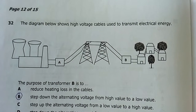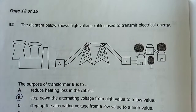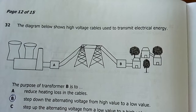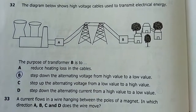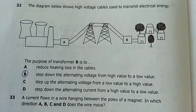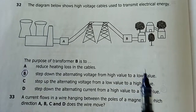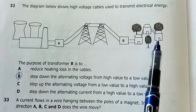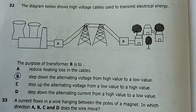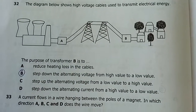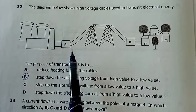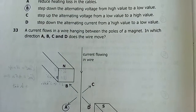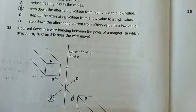Question 32: A diagram shows high-voltage cables used to transmit electric power — the national grid. The purpose of transformer B is to step down the voltage before it is fed to domestic circuits.